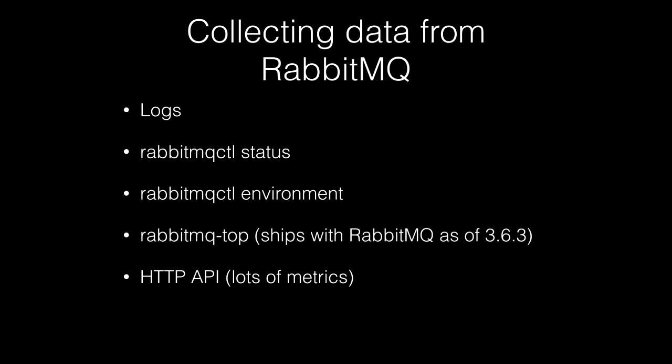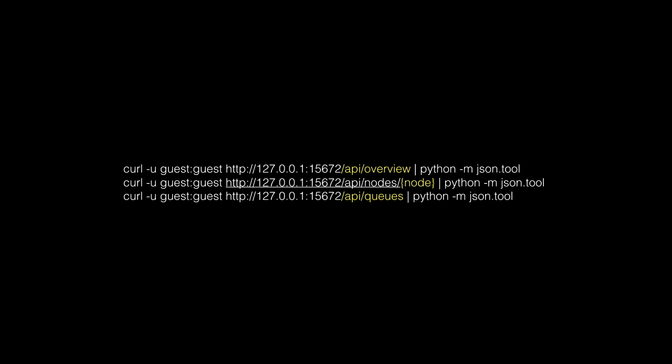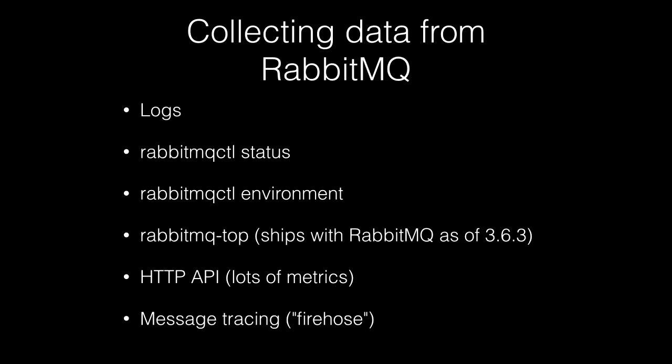The HTTP API is what the management UI is built on and it exposes a lot of metrics — probably too many, and we keep adding more. The easiest way to get to a reference for this API is to go to /api on any RabbitMQ node that has the management plugin enabled. Try these example queries; piping into Python will pretty-print your JSON, which is very useful if you're getting a few pages of deeply nested data back.